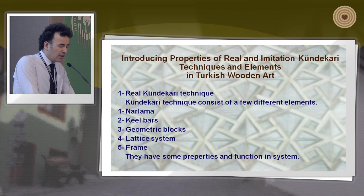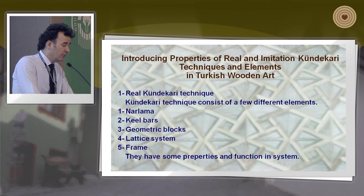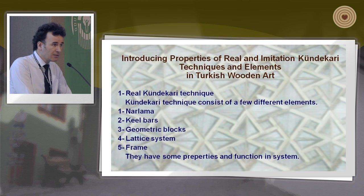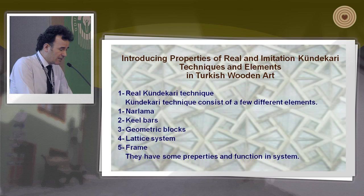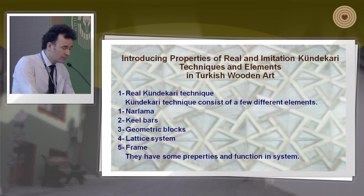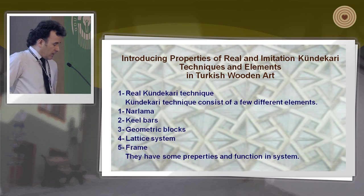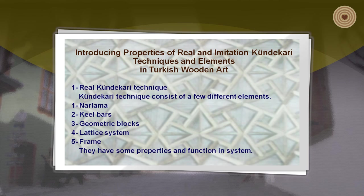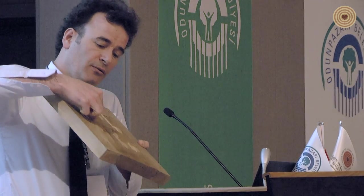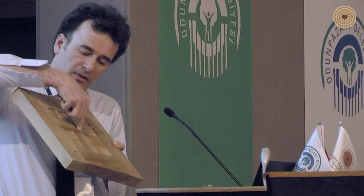Real Kundakari technique consists of a few different elements. The first one is narlama. The second one is kill bars. The third one is geometric blocks. Then there is the lattice system and frame elements — geometric block, decorated kill bar, narlama, lattice system, and frame.